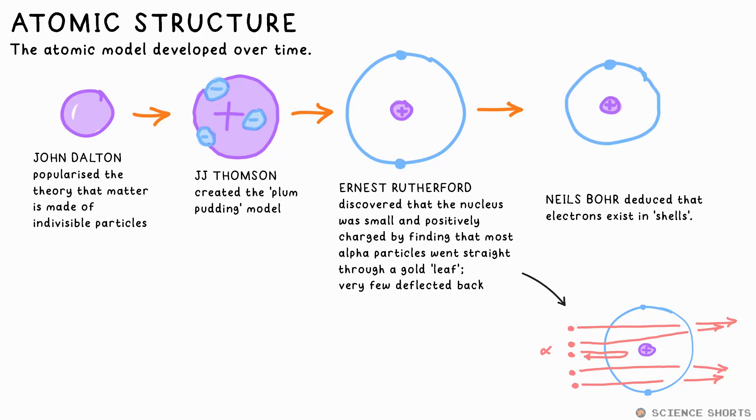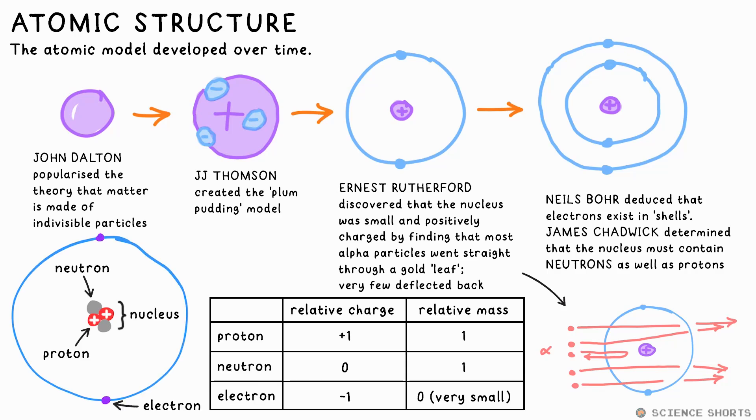Niels Bohr later discovered that electrons exist in shells or orbitals, then James Chadwick discovered that the nucleus must also contain some neutral charges. We call these neutrons, while the positive charges in the nucleus are called protons. Protons and electrons have equal and opposite charges, so we just say they're plus one and minus one, relatively. Neutrons have a charge of zero. Protons and neutrons have essentially the same mass, so we say they have a relative mass of one. Electrons are very light in comparison, so we say they have a mass of zero or just very small, depending on the situation.